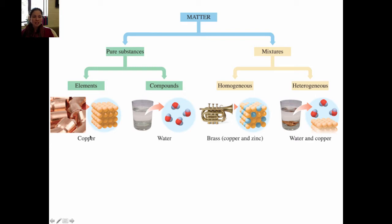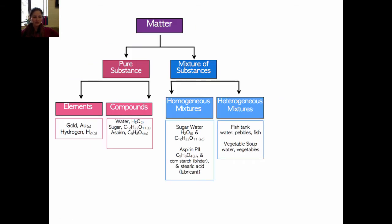You can tell a pure element because the name of the thing is usually the same as the name of an actual element. You can also tell from the chemical formula whether something is an element. For example, in the flowchart in your activity, the things labeled as pure elements are gold and hydrogen. Notice that each of them has only one type of element in their chemical formula — that is what defines them as elements.